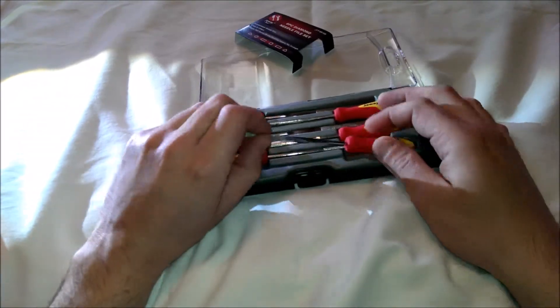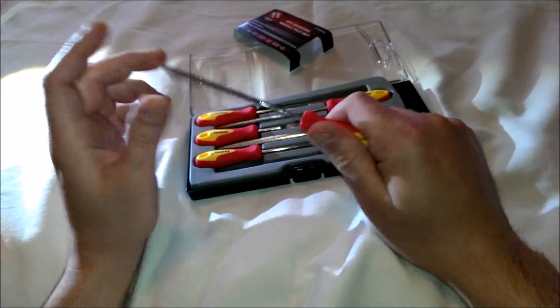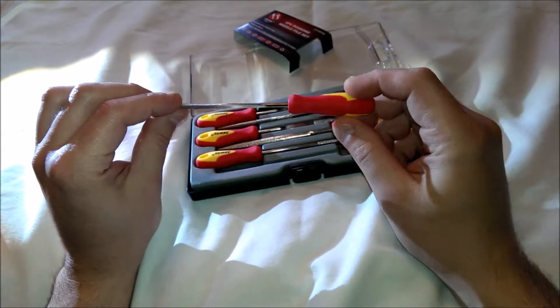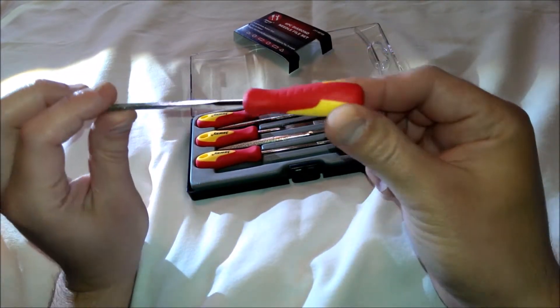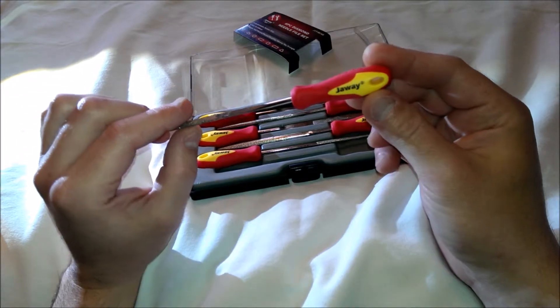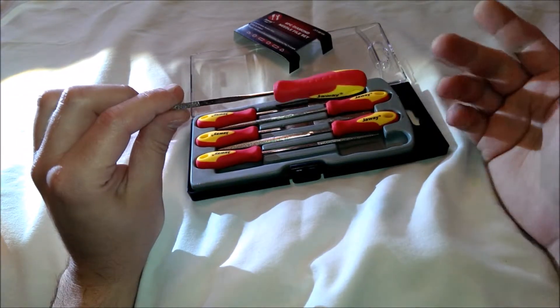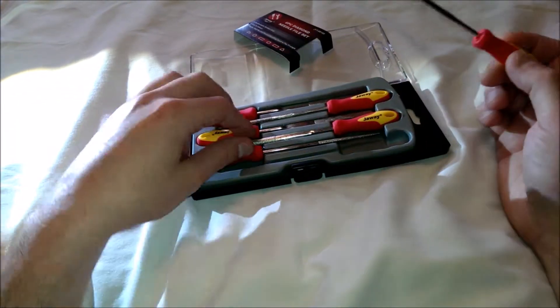Files here. They all have a nice rubberized grip on them as you can see. They are red and yellow with a little Joey logo on them.